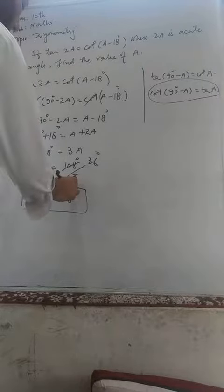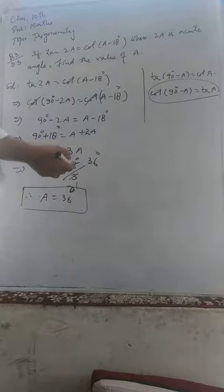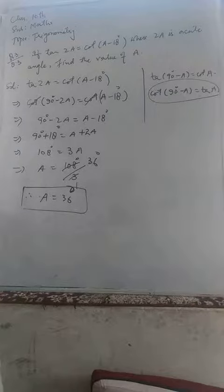2A equals 72 degrees, which is also an acute angle, because an acute angle is that angle which lies between 0 and 90 degrees.